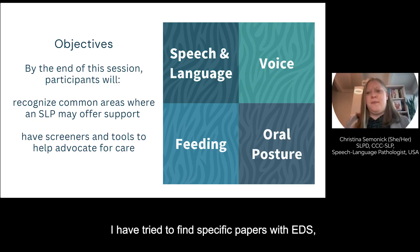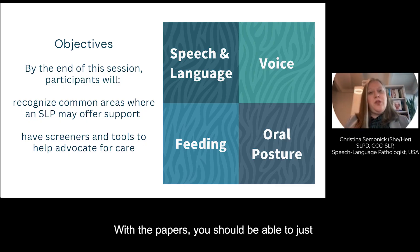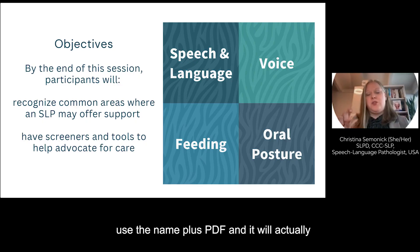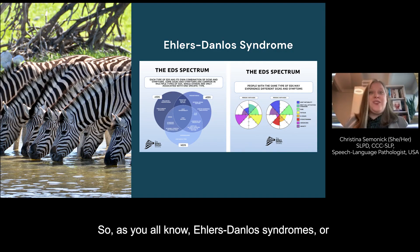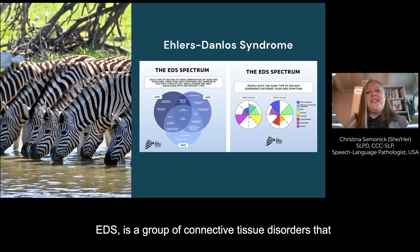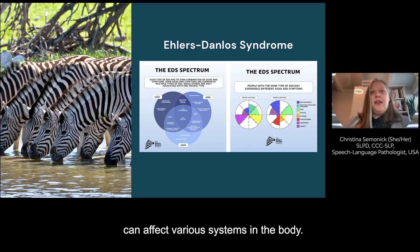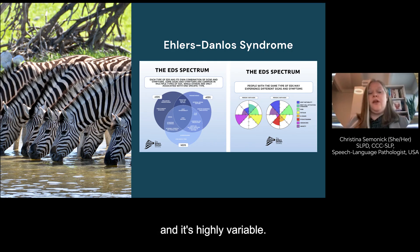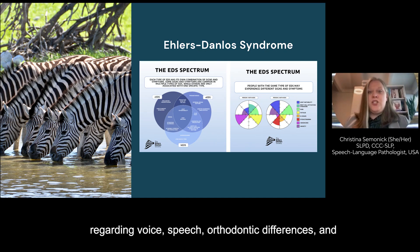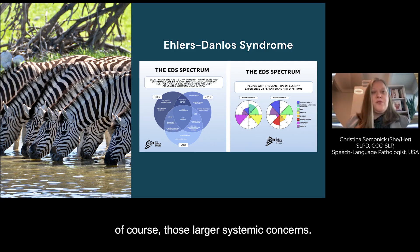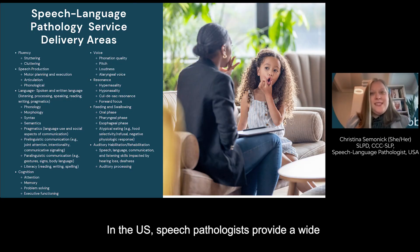I really hope to arm you with a few tools, such as screeners and papers that may help you advocate for services, especially as you come across people who maybe have a little less understanding of EDS. Where possible, I have tried to find specific papers on EDS, but there are some general ones in there too. With the papers, you should be able to just use the name plus PDF and it will give you a copy of the screener itself. As you all know, Ehlers-Danlos Syndrome is a group of connective tissue disorders that can affect various systems in the body. It's systemic, multifactorial, and highly variable. Most of my clients have concerns regarding voice, speech, orthodontic differences, and of course those larger systemic concerns.